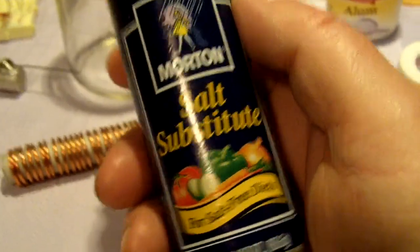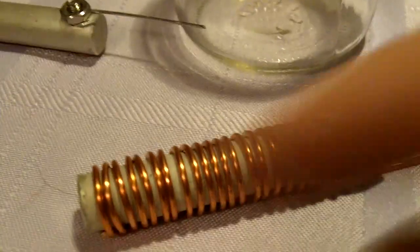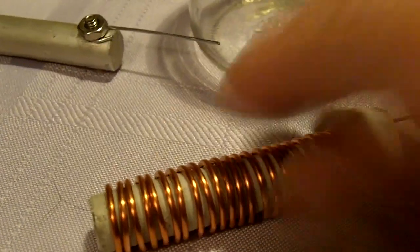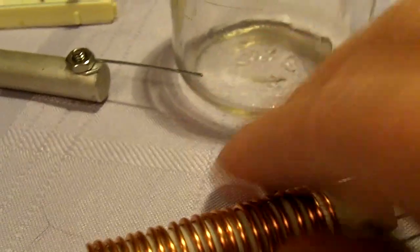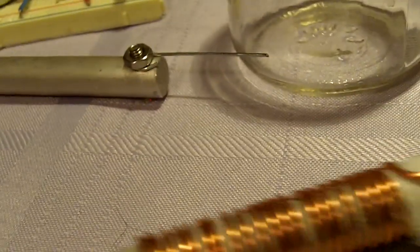Then I took some substitute salt, this stuff right here, and I sprinkled it over, turned it, sprinkled it on, not a whole lot but just a coating of it on it. And again I rubbed it in with my finger like so.